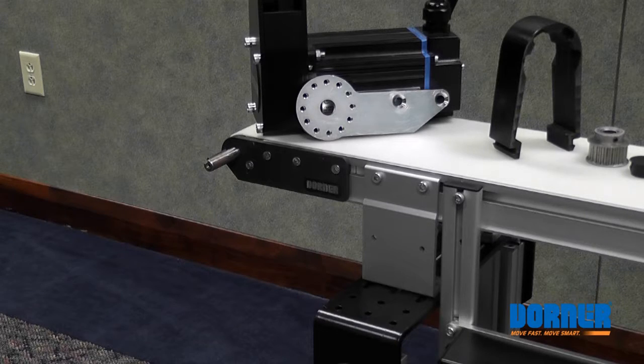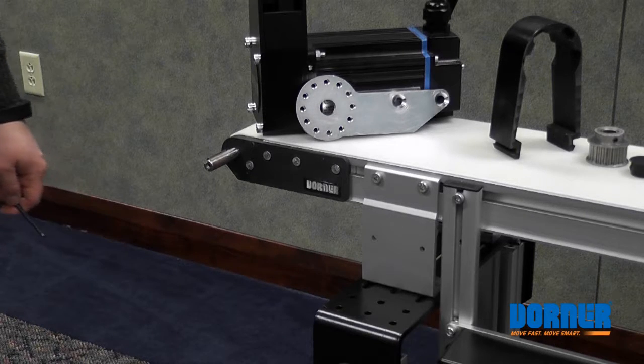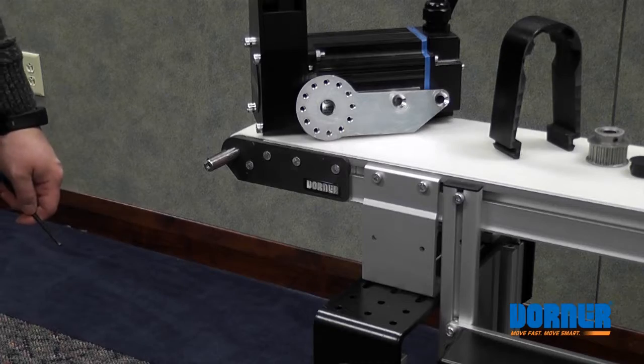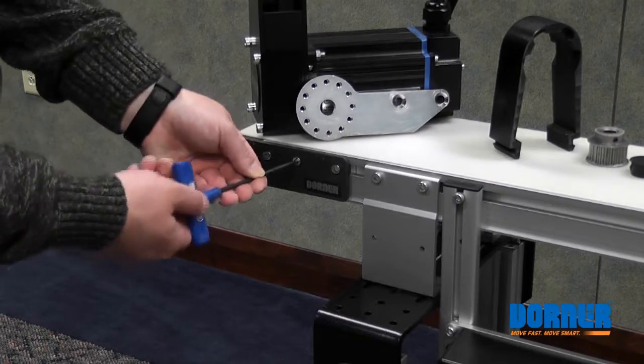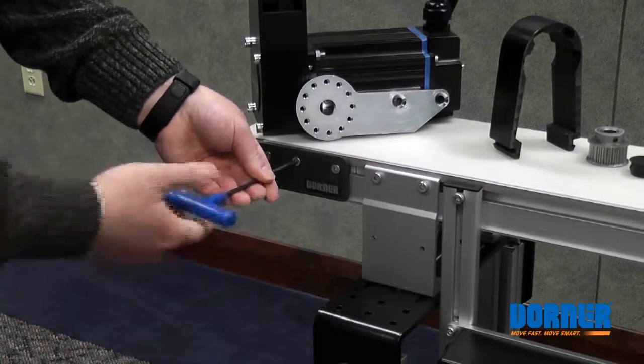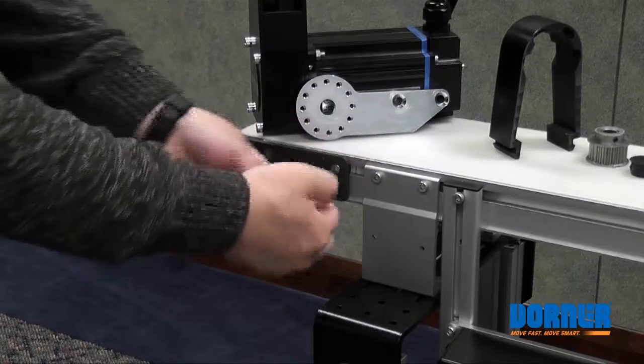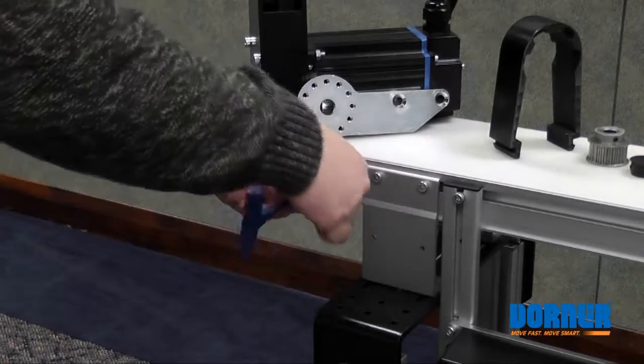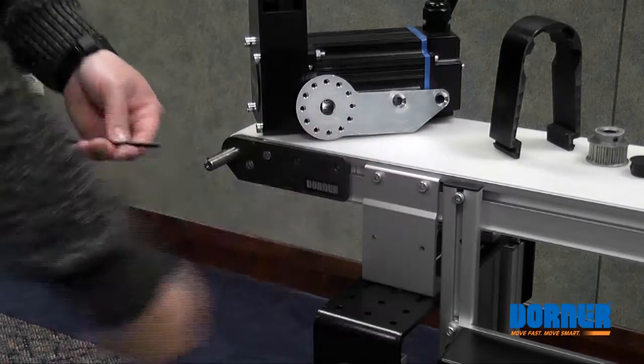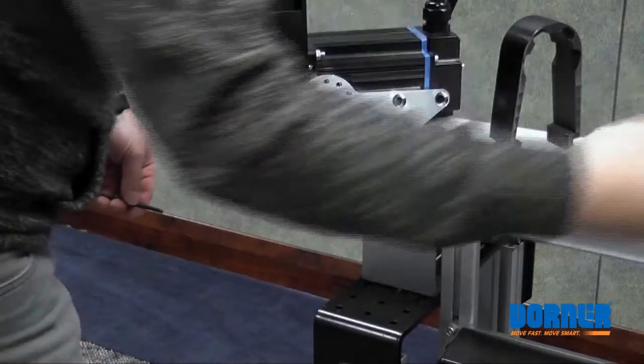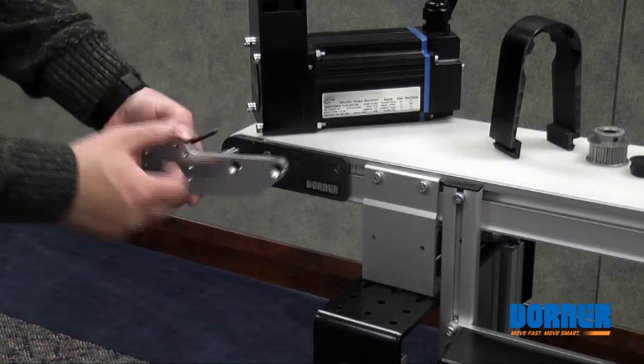The first step is to install the motor mounting adapter plate. To do that we need to remove two screws from the head plate and then install the adapter plate using the two flat head screws provided. This adapter plate is designed to mount both on the A side and the D side of the conveyor with the same part.